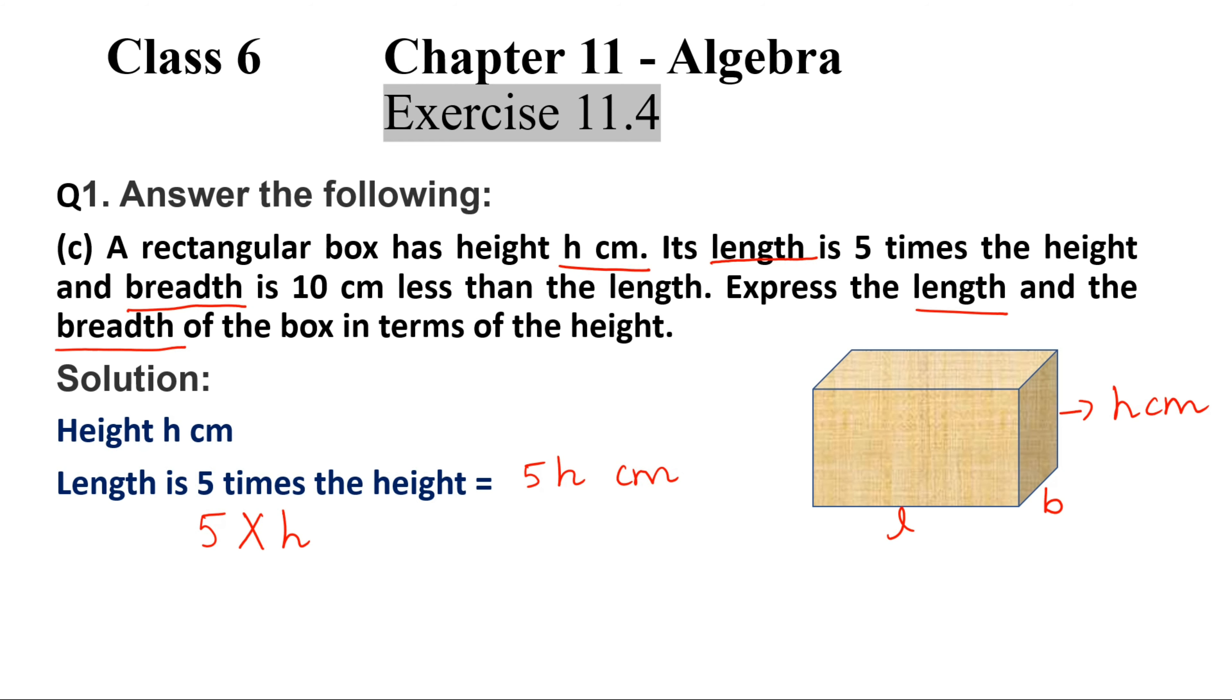Next, breadth is 10 centimeter less than the length. So whatever is the length, it is 10 centimeter less than that, so length minus 10 centimeter. The length is given as 5h, so 5h minus 10. The solution here would be 5h minus 10 centimeter because we need to write it in terms of h.